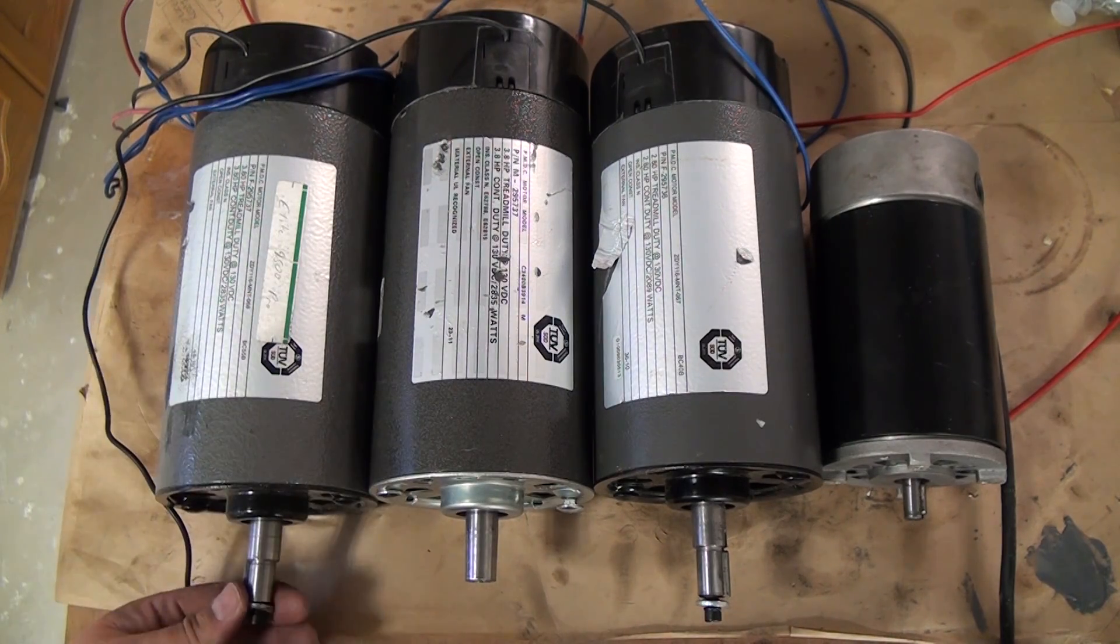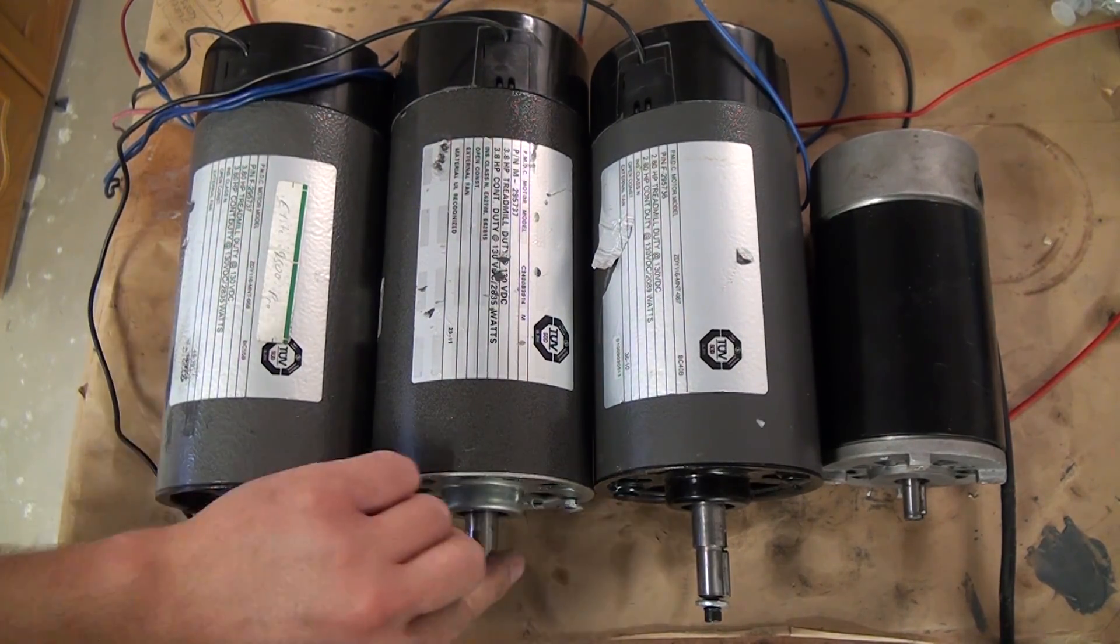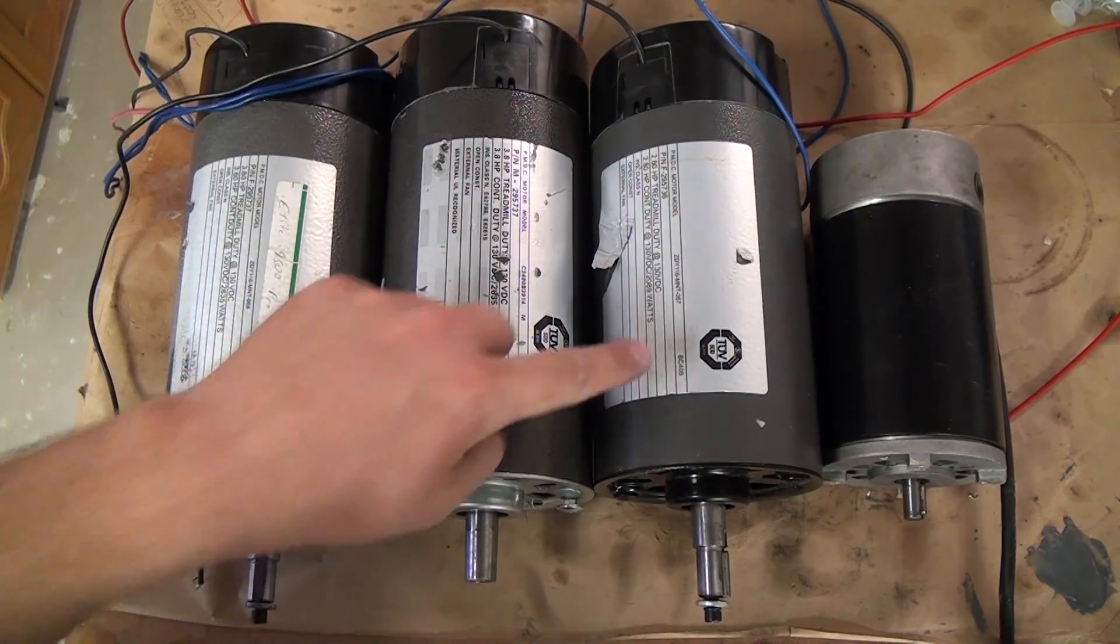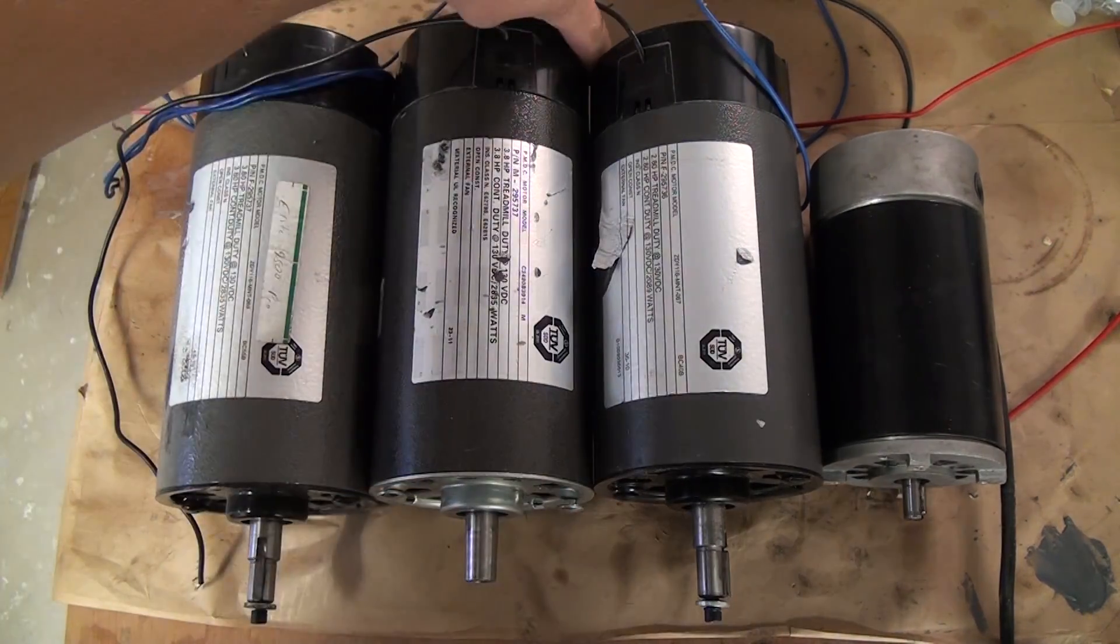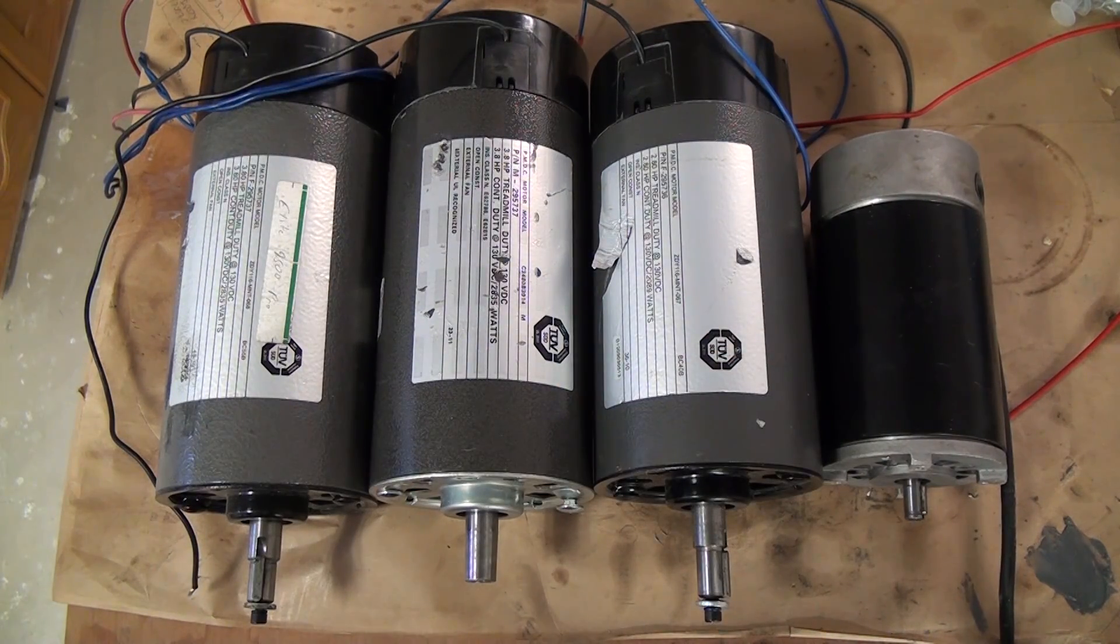In this video I'll be talking about the motor and motor controller. The two left motors are 3.8 horsepower DC motors that were both damaged in shipping. I bought them on eBay and the seller refunded my money because they were unusable. This is the 2.8 horsepower motor that I ended up going with, and this is the stock 1 horsepower motor.